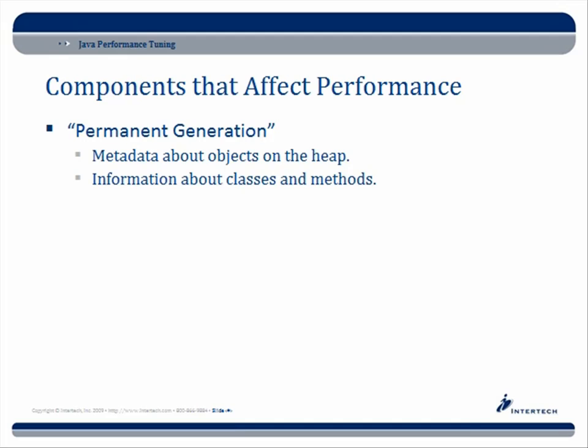The permanent generation — shown as 'perm gen' in profiler tools — is a special area of the heap. It's actually quite large, typically larger than either the young or old generation. It stores metadata about objects, classes, and methods, and if you use reflection, much of that information comes from the permanent generation.